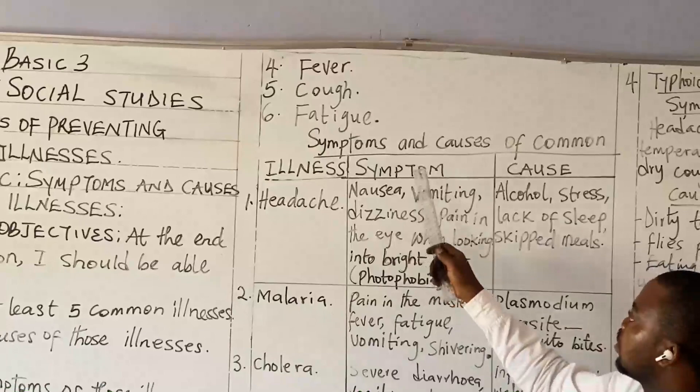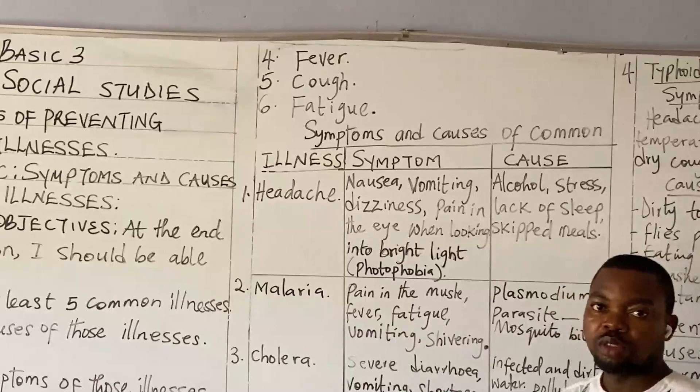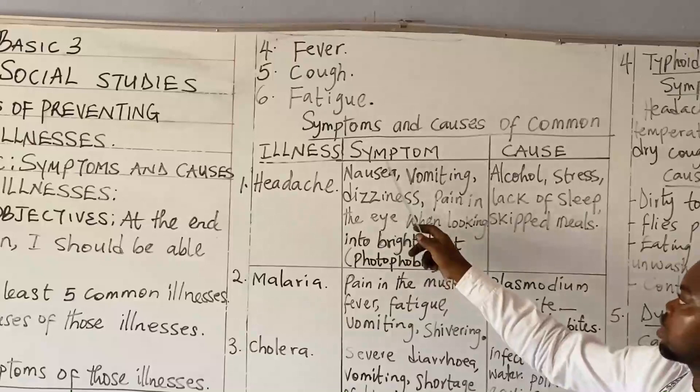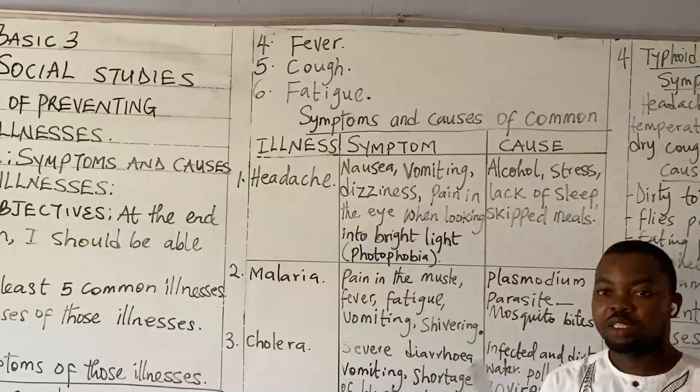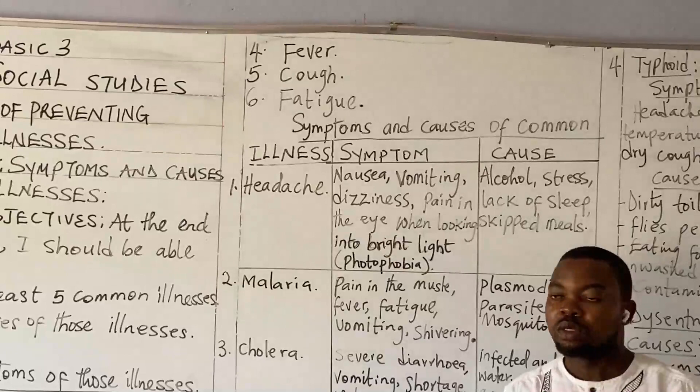So we have symptoms and causes of common illnesses here. We have illness, we have symptoms, and we have cause. Number one illness is headache. What are the symptoms of headache? We have nausea, we have vomiting, dizziness, we have pain in the eye when we get into bright light, which is called photophobia.